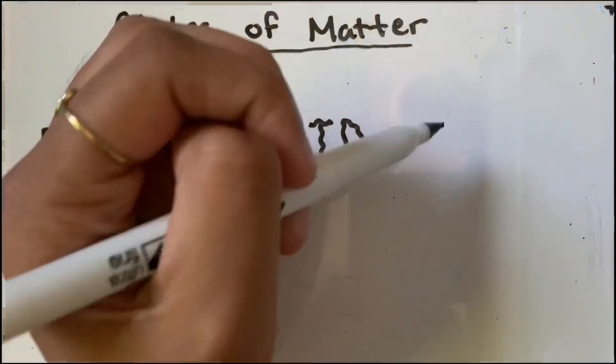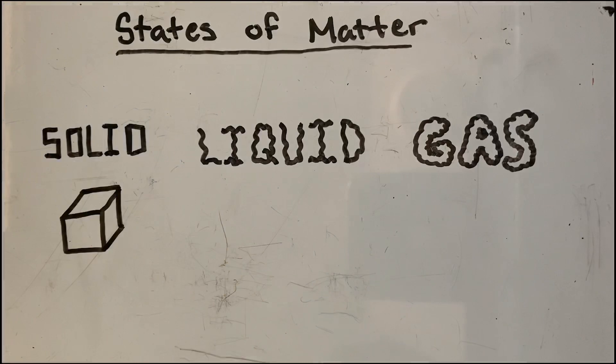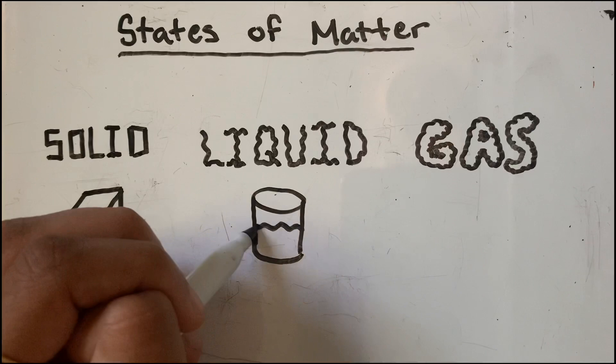In a solid, molecules are held together in an orderly fashion with little freedom of motion. Molecules in a liquid are close together but are not held so rigidly in position and can move past one another. In a gas, the molecules are separated by distances that are large compared with the size of the molecules.